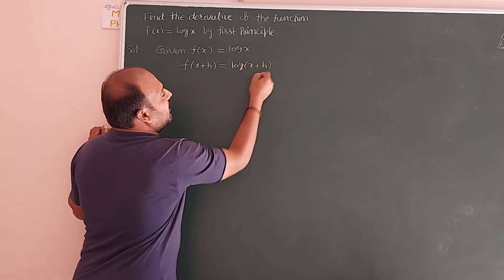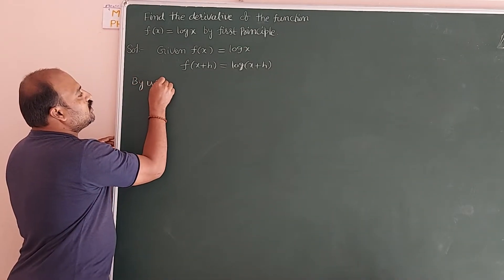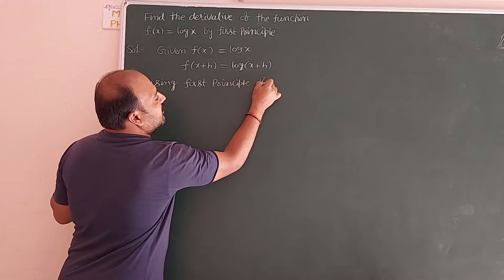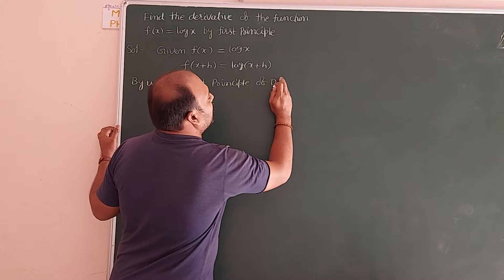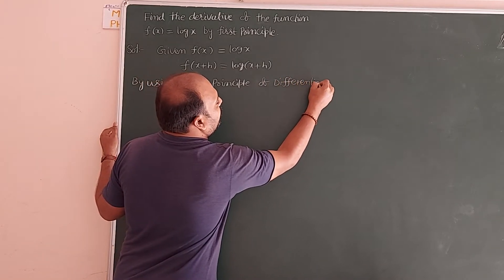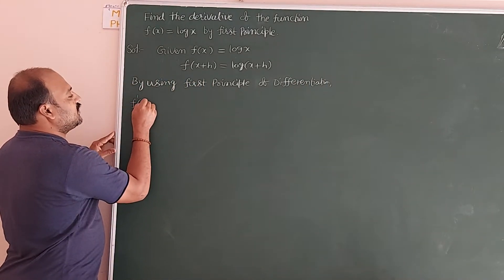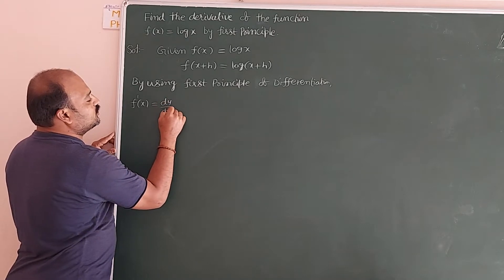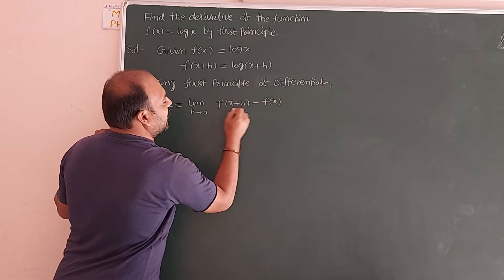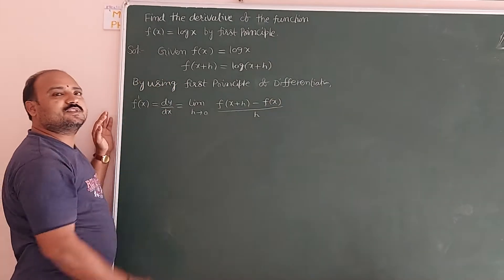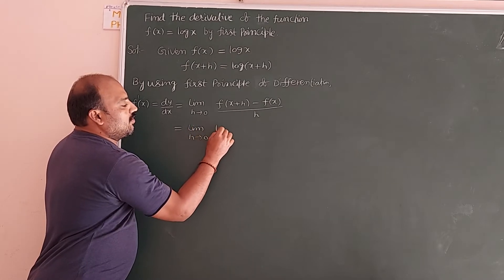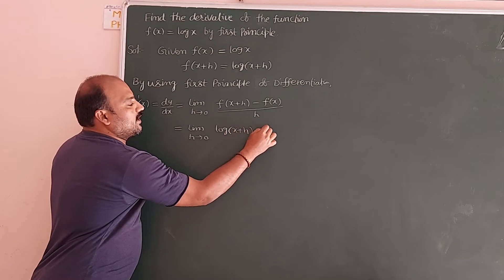Now, by using the first principle of differentiation, f'(x) = dy/dx = limit as h tends to 0 of [f(x+h) minus f(x)] divided by h. Substituting, wherever f(x+h) appears we replace with log(x+h), and f(x) is log x, giving us: limit h→0 of [log(x+h) minus log x] divided by h.